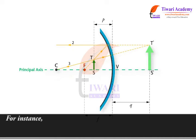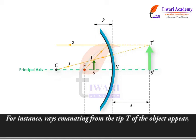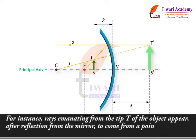For instance, rays emanating from the tip T of the object appear after reflection from the mirror to come from a point T1 which is behind the mirror.